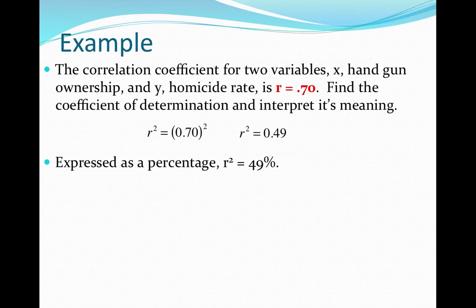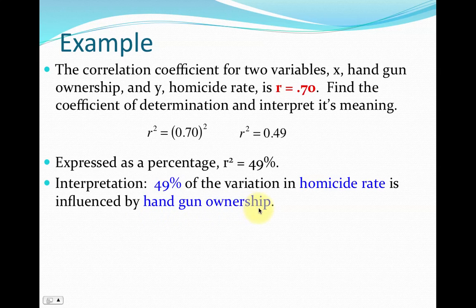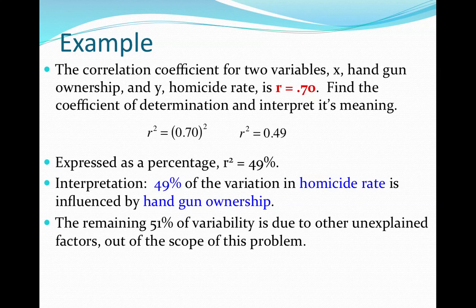To interpret this, we use the same structure as the previous example. 49% of the variation in homicide rate is influenced by handgun ownership. The remaining 51% of variability is due to other unexplained factors out of the scope of this problem.